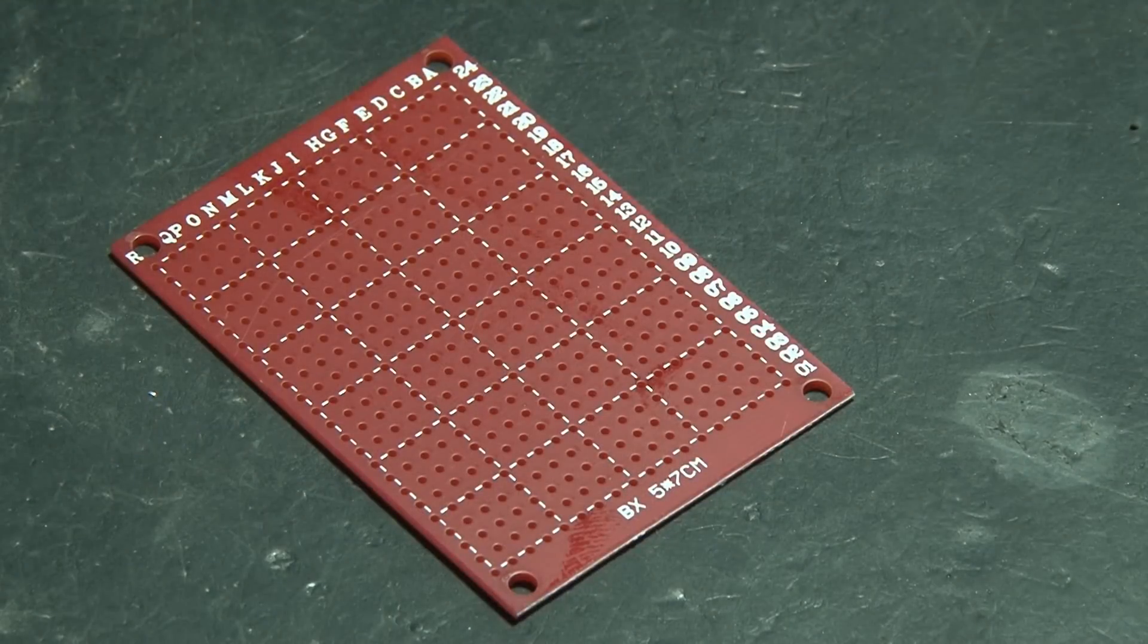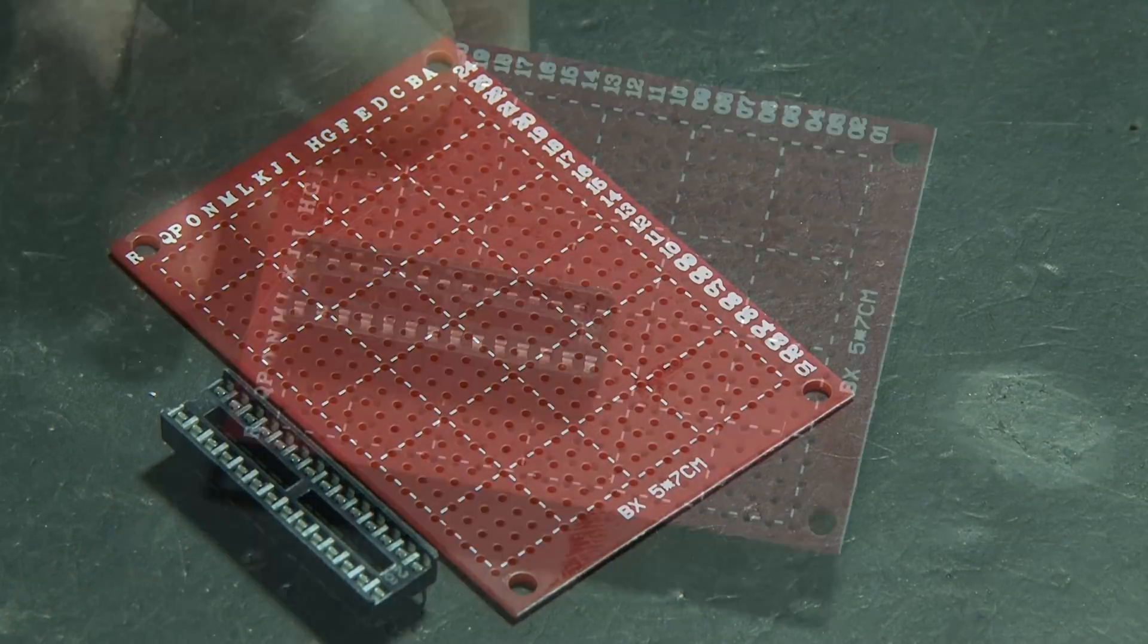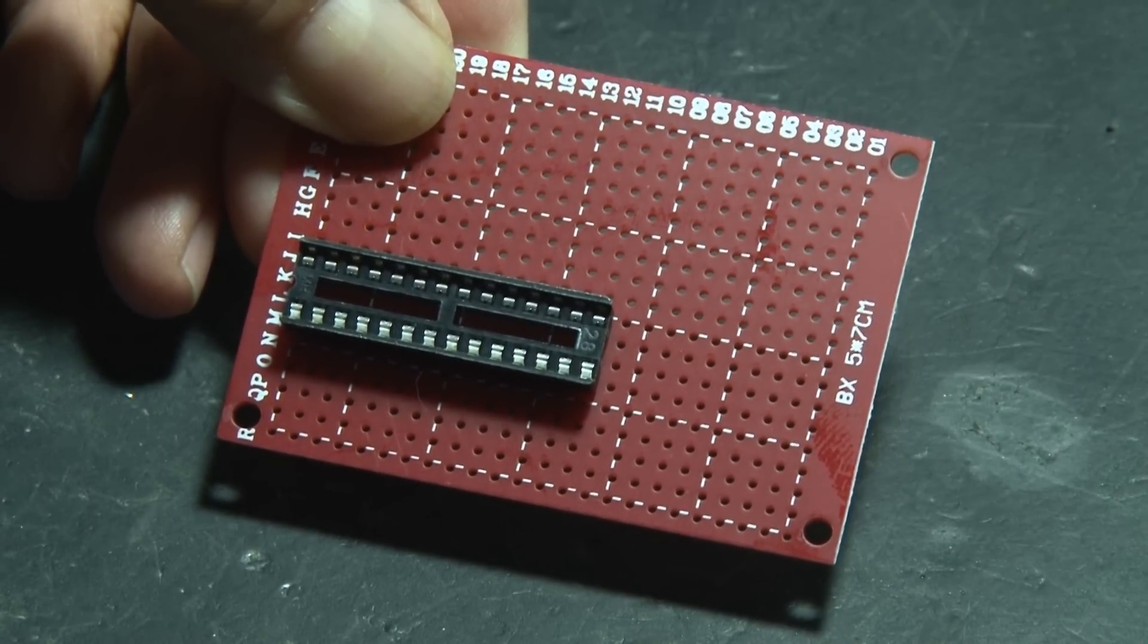The brains of this project is an ATmega328 chip, so we'll need a socket for that, and that's the first piece to get laid down onto our circuit board.